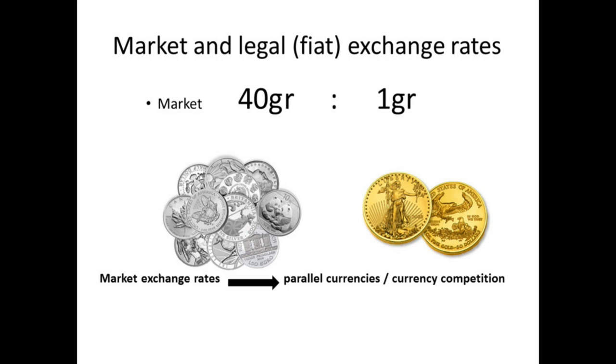Market participants are free to bring about their exchanges either with gold coins or silver coins, and they will do this based on the physical qualities of these metals. Silver coins have a lower purchasing power and are therefore more suitable for day-to-day exchanges. Gold coins have a much higher purchasing power and are therefore more suitable to transfer wealth from the U.S. to Europe or other places. So what happens if the government comes and imposes a legal exchange rate different from the market rate?